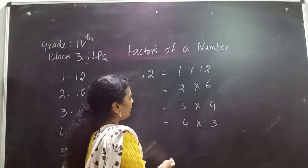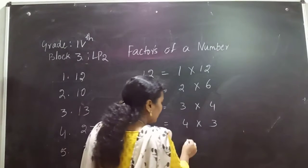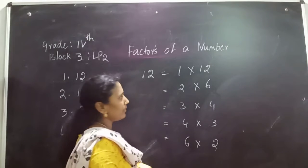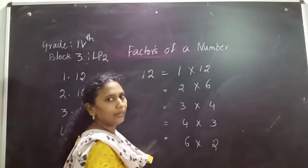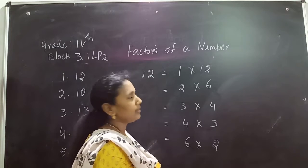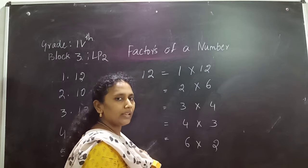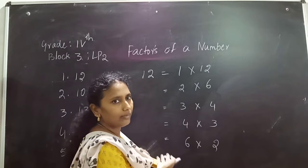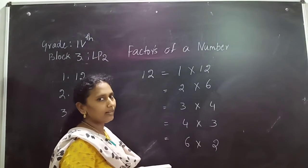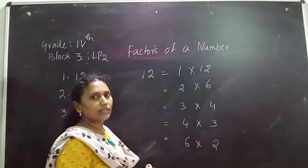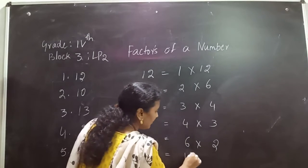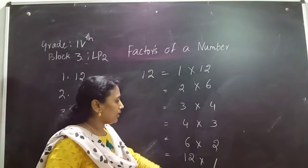Is 12 there in the 5 times table? No. Is 12 there in the 6 times table? Yes. 6 times 2 is 12. Is 12 there in the 7 times table? No — 7 times 2 is 14, not there. Is 12 there in the 8 times table? No — 8 times 2 is 16. Is 12 there in the 9 times table? 9 times 2 is 18, not there. Is 12 there in the 10 times table? No — 10 times 2 is 20. Is 12 there in the 11 times table? 11 times 1 is 11, 11 times 2 is 22, not there. And again, go for the number 12. 12 times 1 is 12.